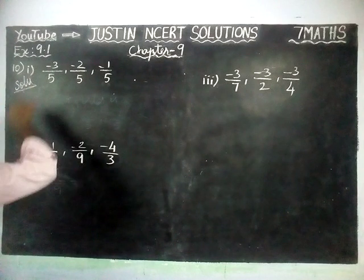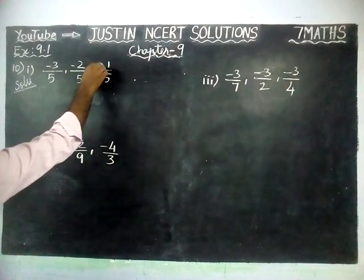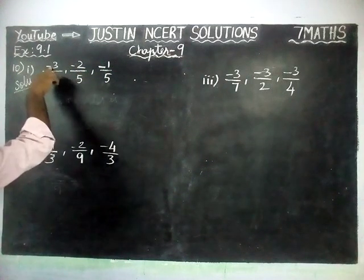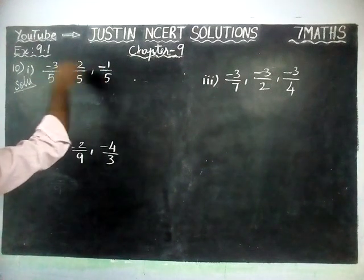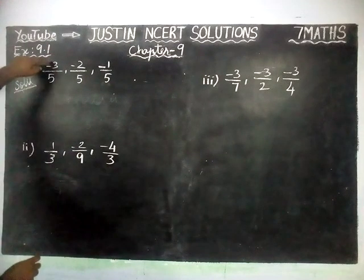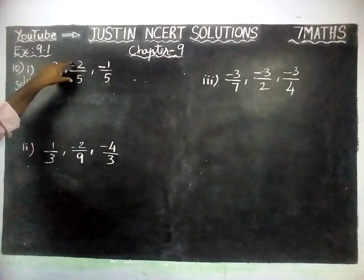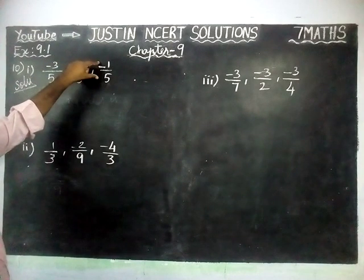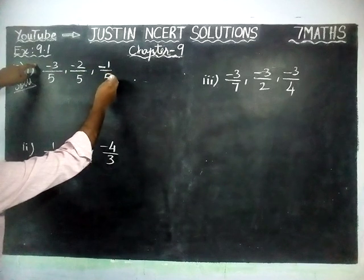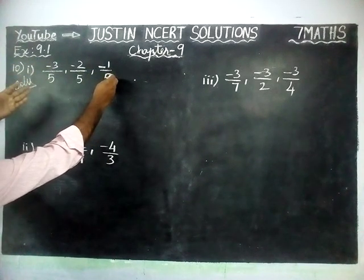The first part: minus 3 by 5, minus 2 by 5, minus 1 by 5. Here, all the denominators are equal, and the numerators are minus 3, minus 2, minus 1. So this is already in ascending order, because minus 3 by 5 is the smallest value and minus 1 by 5 is the highest. On the number line, minus 1 by 5 comes on the right-hand side and minus 3 by 5 comes on the left-hand side. So this is already in ascending order.